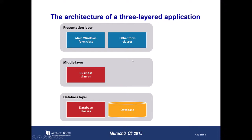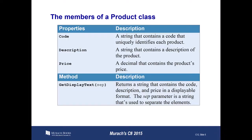Whenever we work with encapsulation, what we're going to try to do is encapsulate the things that come out of the database so we can display them on our web pages or Windows Forms. For example, if we have members of a product class — it could be a product we're trying to buy on Amazon, like a shirt, a guitar, or a book — this class can have properties like a code, a description, and a price. It can also have methods, like the ability to get the display text we want to show on our website. We'll work with this more when I start digging into the code.